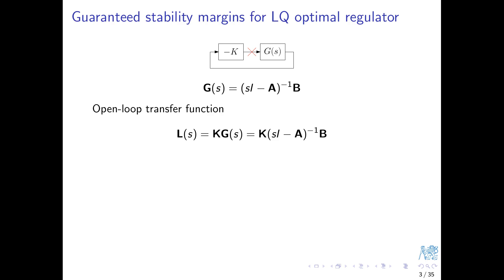Note the order here — in the scalar case it doesn't matter, but in the matrix case we must be careful and consistent with where we cut the feedback loop open. The inputs to the open loop transfer function enter G first and only then go to K. A useful mnemotechnic is that we read series interconnections of matrix transfer functions from right to left. Assuming a single input, B is a column vector, K is a row vector, and the open loop transfer function is a scalar.